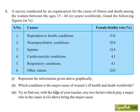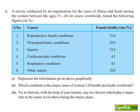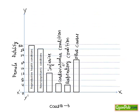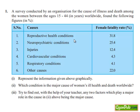Now let's move on to the second bit: which condition is the major cause of women's ill health and death worldwide? Looking at the graph, the largest bar is for reproductive health conditions, which is 31.8%. Therefore, reproductive health conditions is the major cause of women's ill health and death worldwide.